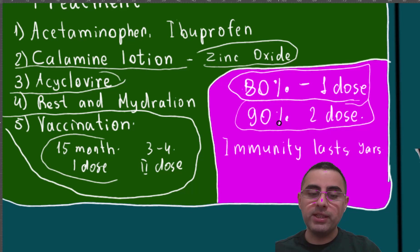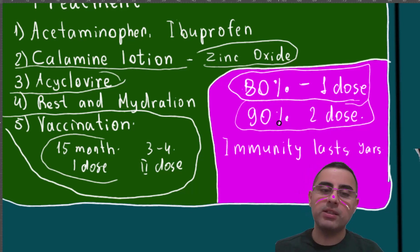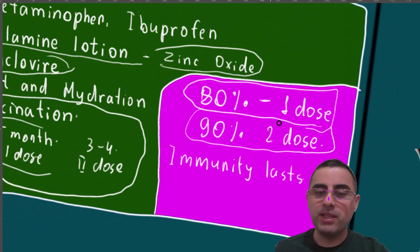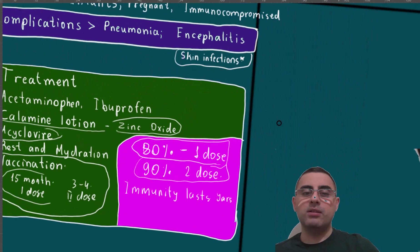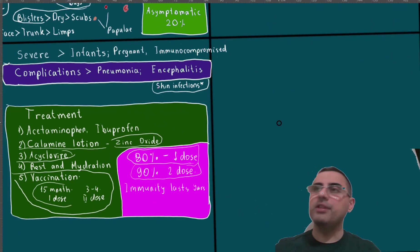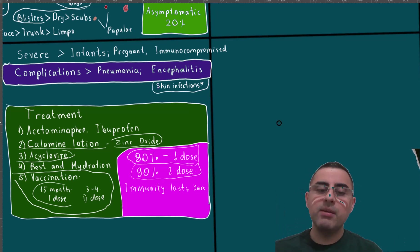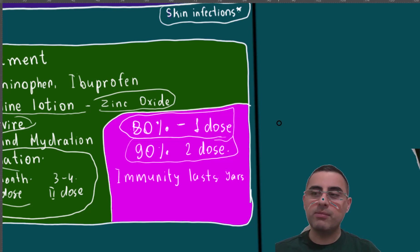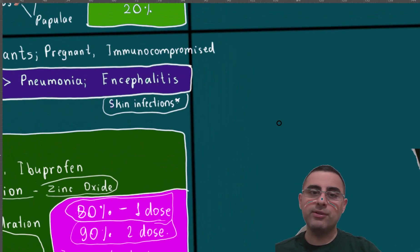Lifelong immunity develops in many cases, especially if a person was already infected by varicella zoster virus. It is possible that after some years a person could still get the infection, but this is very rare. The vaccine also provides lifelong protection in many cases.